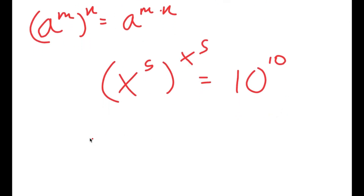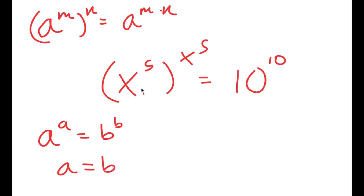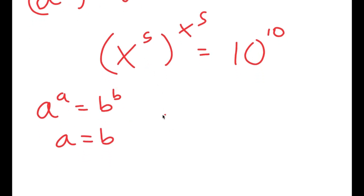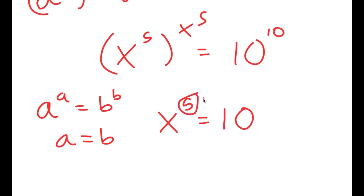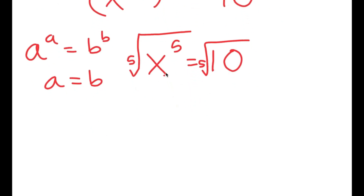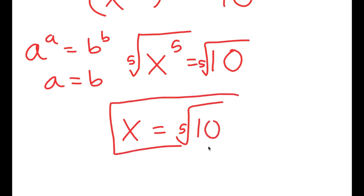My final property of exponents is that if I have something in the form a to the power of a is equal to b to the power of b, this means that a is equal to b. So in this case, x to the power of 5 is equal to 10. Now to solve this, we need to get rid of the power of 5 by taking the fifth root on both sides. The fifth root of x to the power of 5 is x, so I get x is equal to the fifth root of 10. This is my solution.